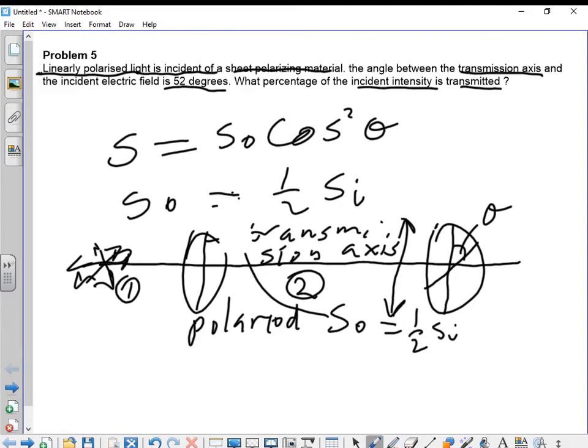From this equation, we are required to compute the percentage of the incident intensity that is transmitted. This is 52 degrees. We are interested in the intensity of the light that passes into region 3. Let's see how we can compute that.